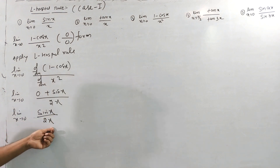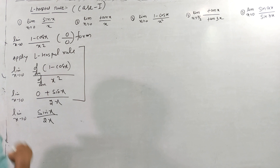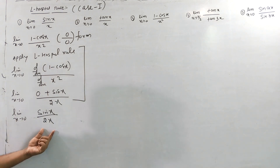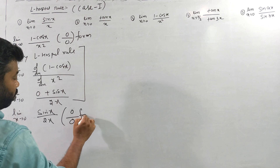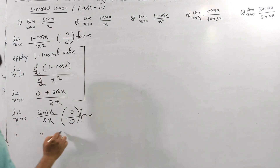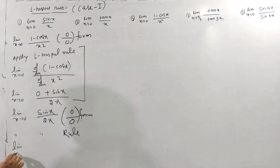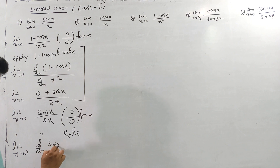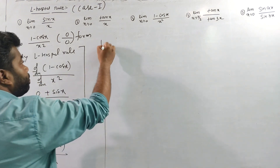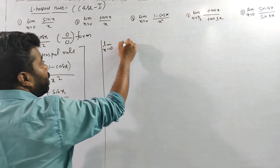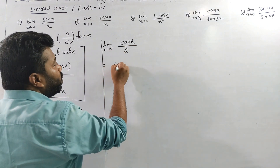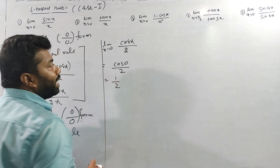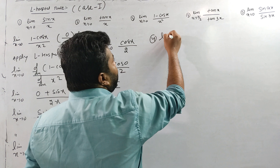Again, substituting gives 0/0, so apply L'Hôpital's rule again: limit x tends to 0 of derivative of sin(x) by derivative of 2x, which is cos(x)/2. Putting x = 0: cos(0)/2 = 1/2. So the answer is 1/2.